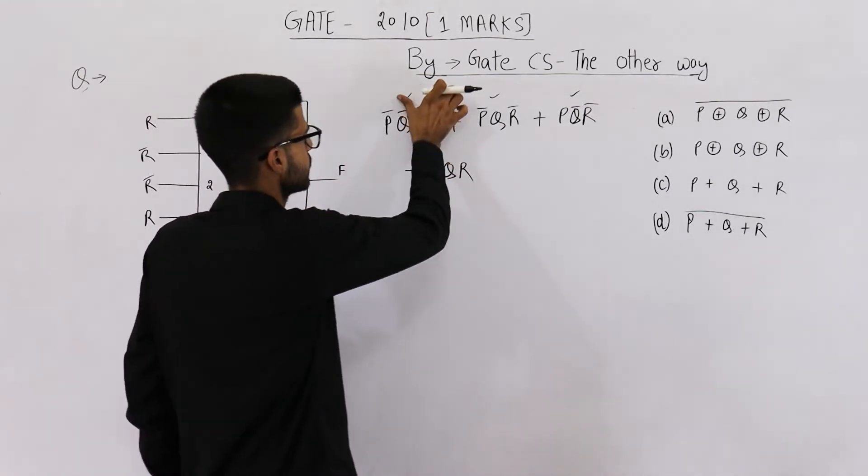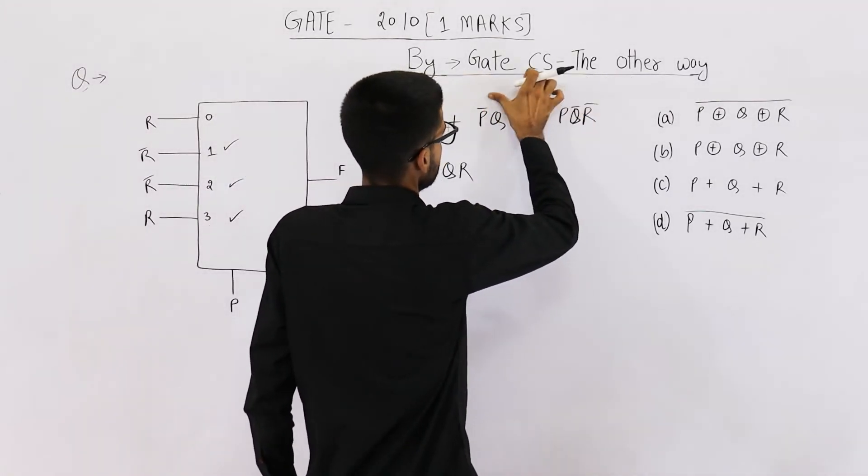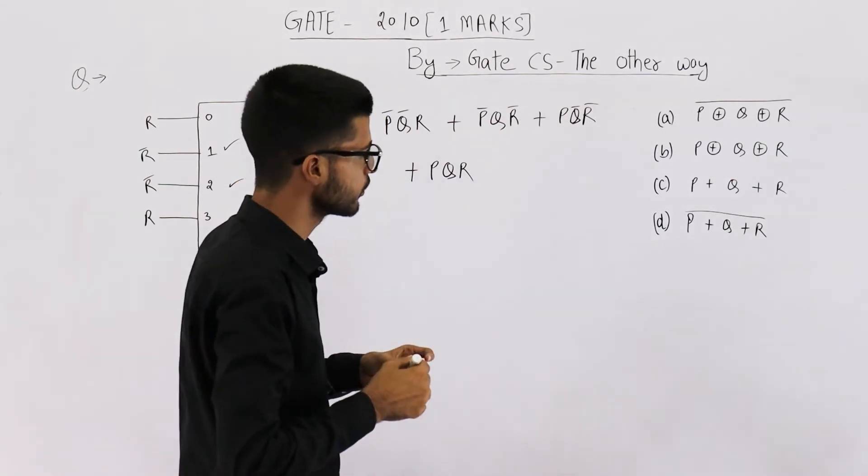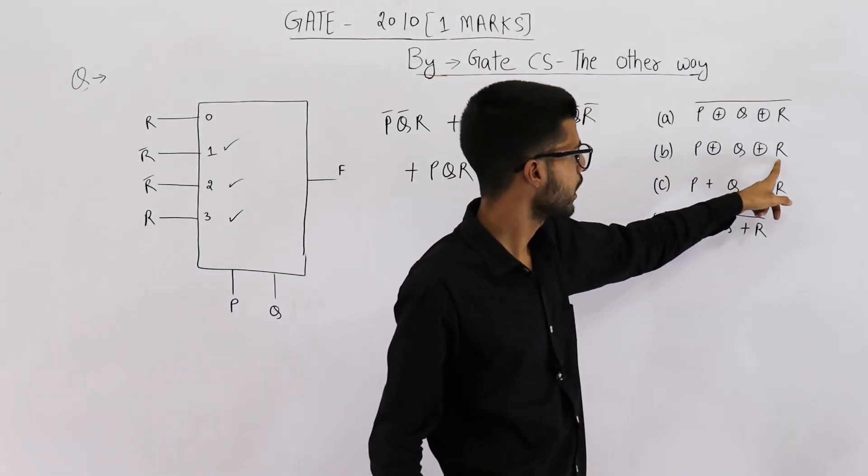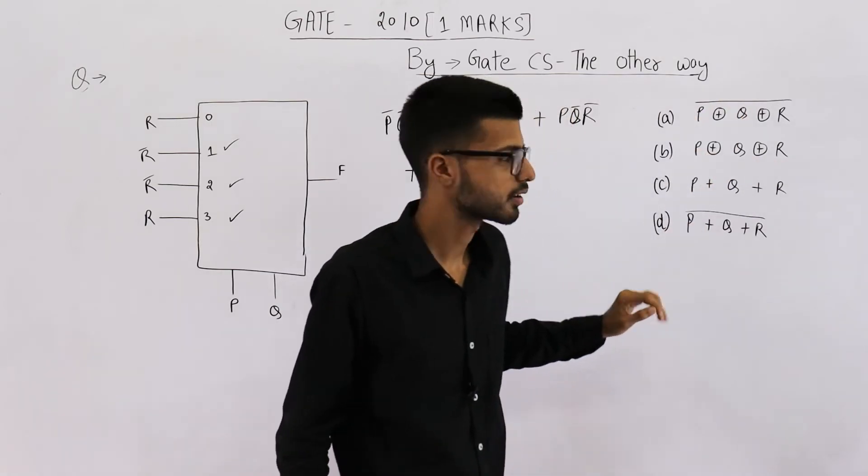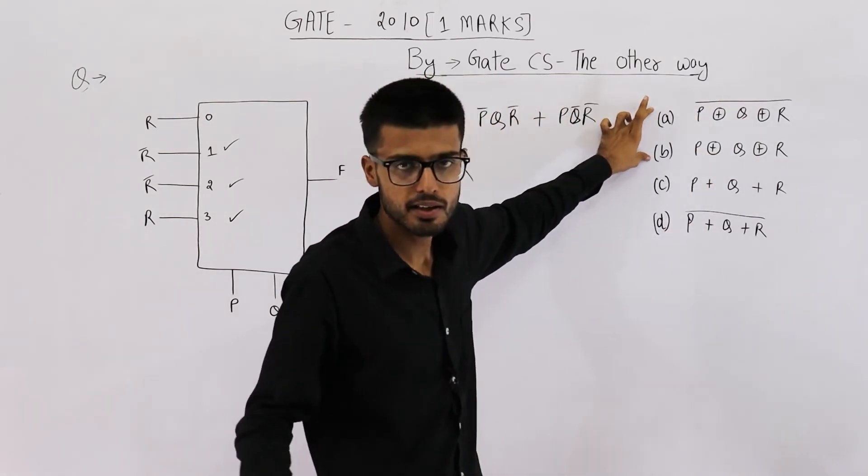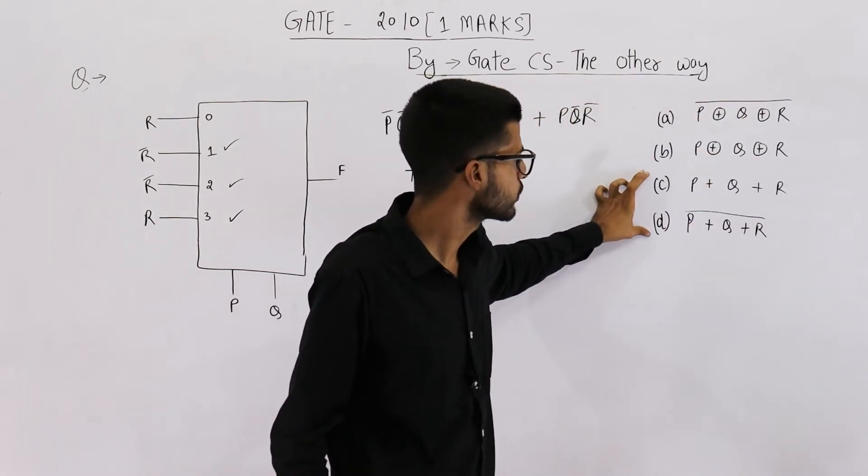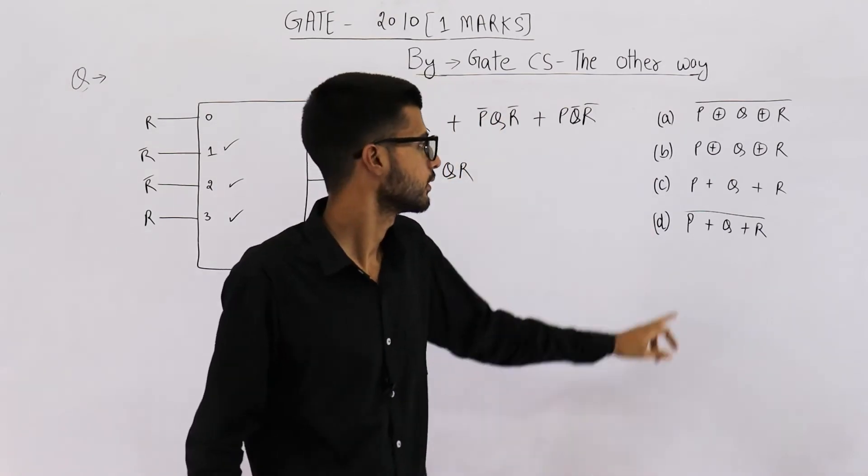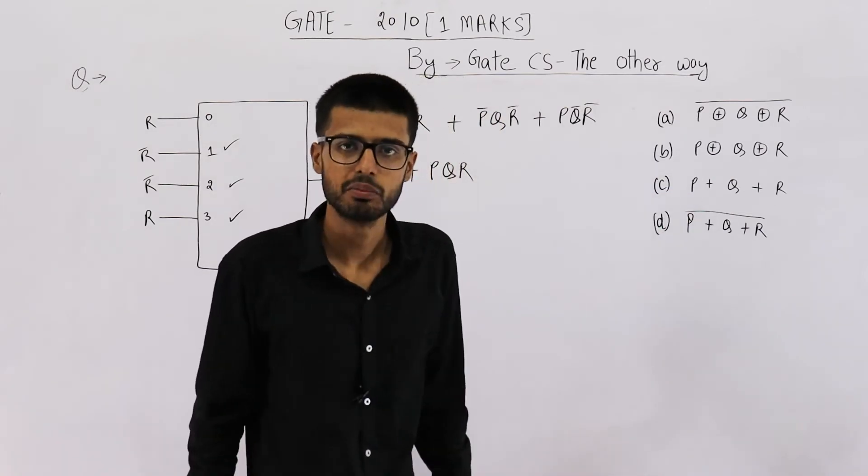Now you see we have XOR of pqr and complement of this XOR. These two options are related to XOR. These two options are related to OR. This is OR and this one is complement of OR.